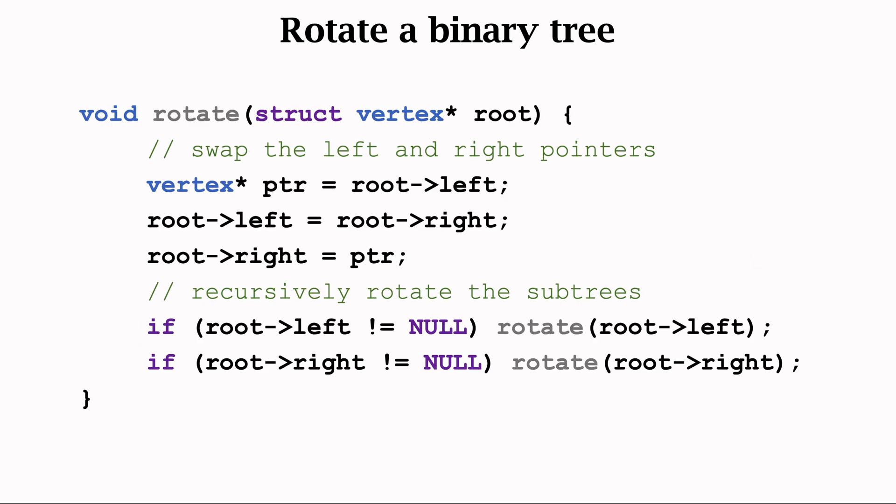The rotation function is easy to implement. The input is the root of the tree. First, swap the left and right pointers of the root.